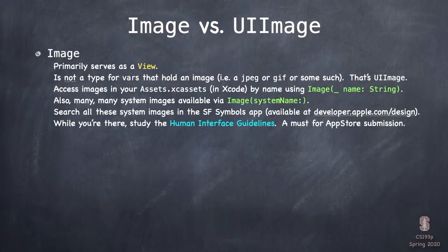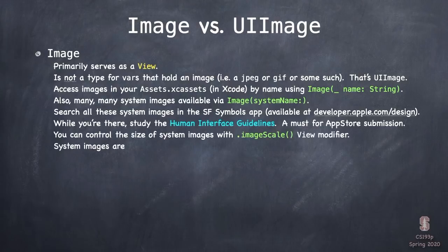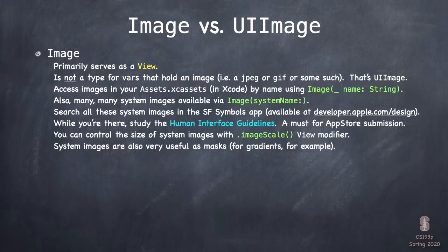The Human Interface Guidelines is an absolute must-read if you ever want to do an App Store submission. It talks about how your UI is supposed to do certain things so all apps do them the same way and the user gets a consistent experience. If you use system name images, you can control how large they are with the imageScale view modifier. Also, system images are really good to use as masks — if you have a gradient, you can have it shine through the system image for cool effects.